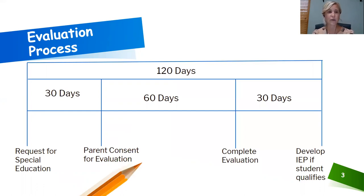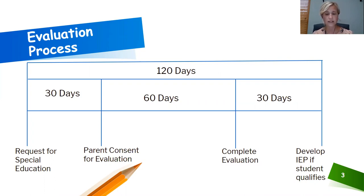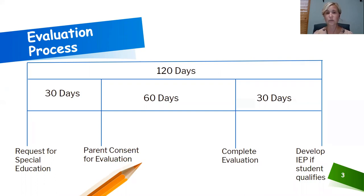This is what Ohio's evaluation process looks like. It's a comprehensive process that can take up to 120 calendar days to complete from start to finish. Once a school district receives a request for special education services from a parent or staff member, the school district must meet within 30 calendar days to determine whether special education testing is necessary. If testing is needed, the school district will gather consent from the parent. Once consent is received, we then have 60 calendar days to complete testing, review the results, and determine whether the student is eligible. If the student is found eligible, the school district has 30 calendar days to write an individualized education plan, or IEP.